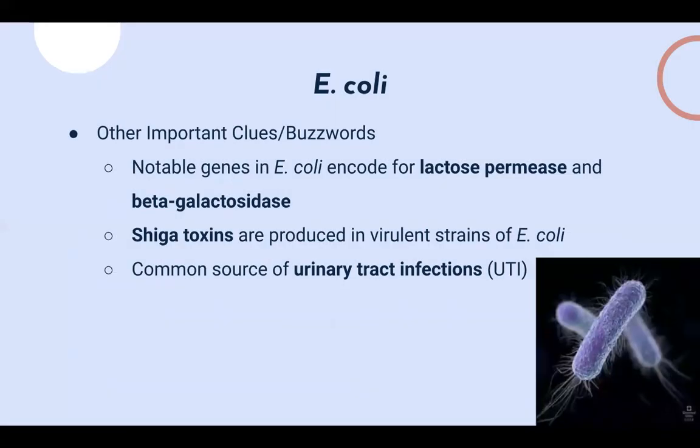Some other important clues and buzzwords for E. coli: notable genes encode lactose permease and beta-galactosidase, which are two enzymes that help break down lactose into glucose and galactose. Shiga toxins are produced in virulent strains of E. coli and come up a lot in toss-ups. Lastly, E. coli is a common source of urinary tract infections.